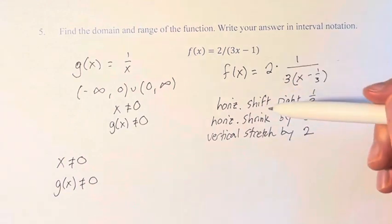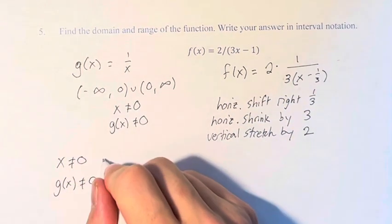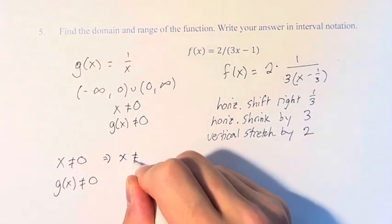First, we have a horizontal shift to the right, 1 third. So this becomes x does not equal 1 third.